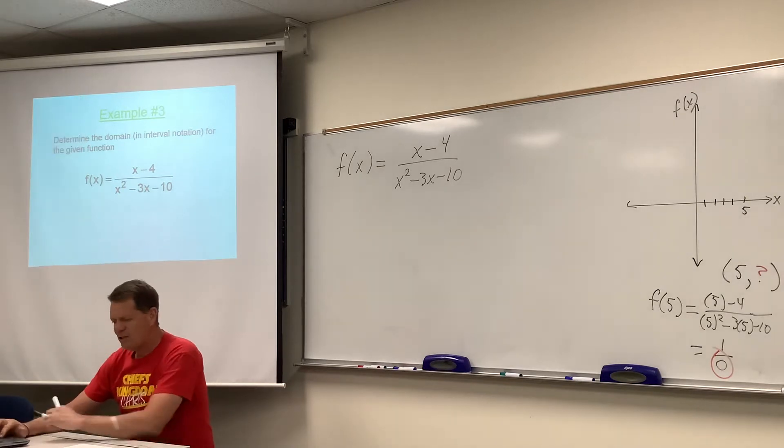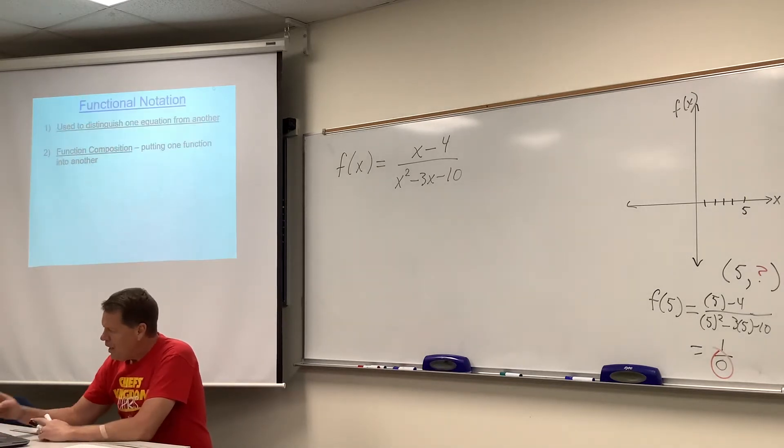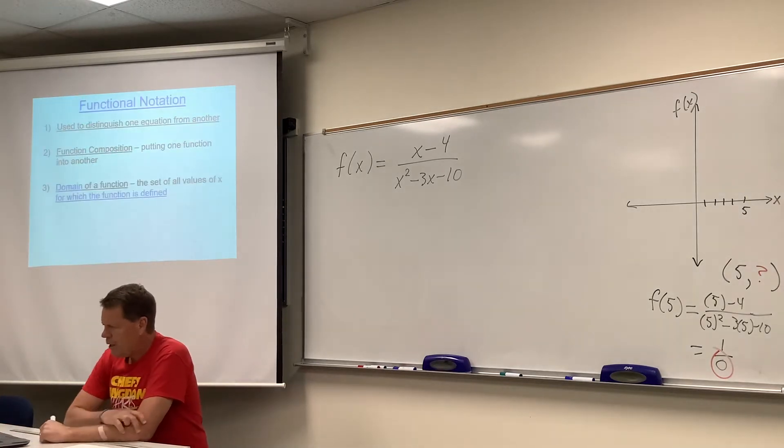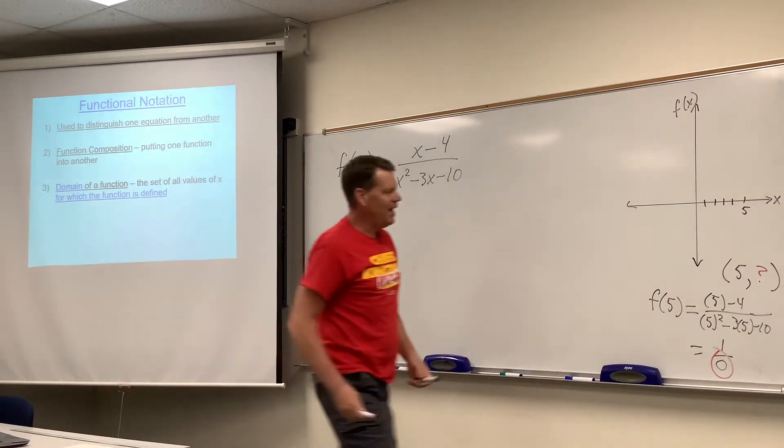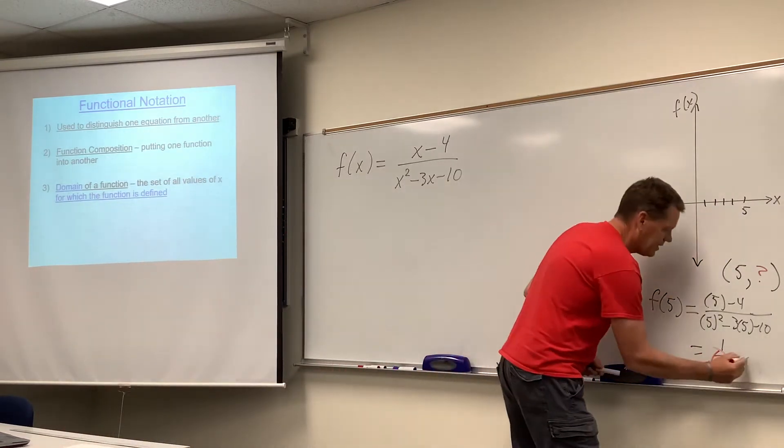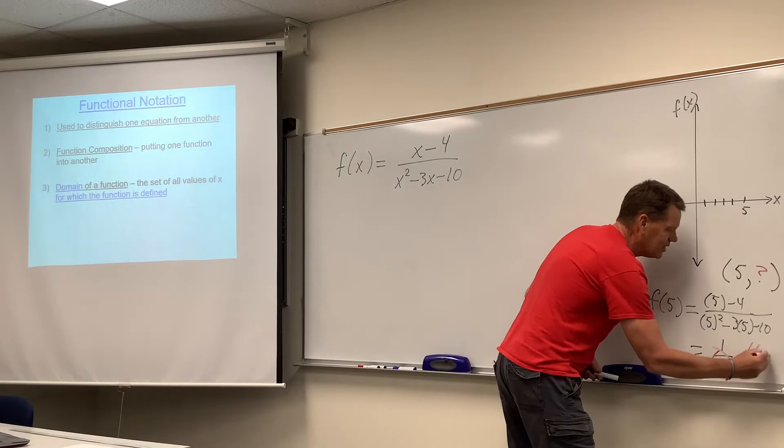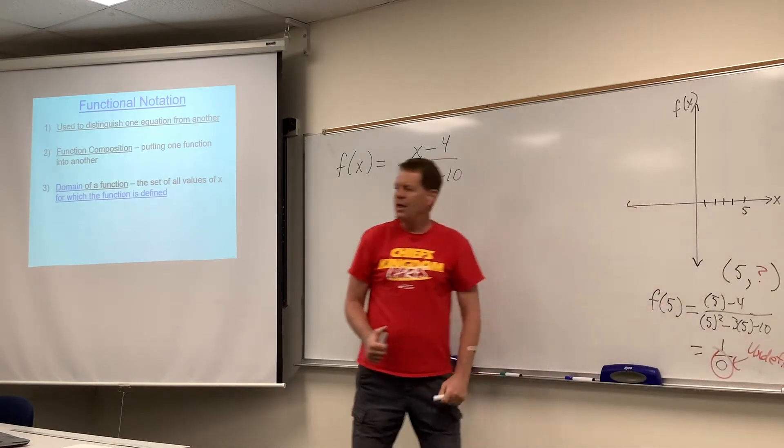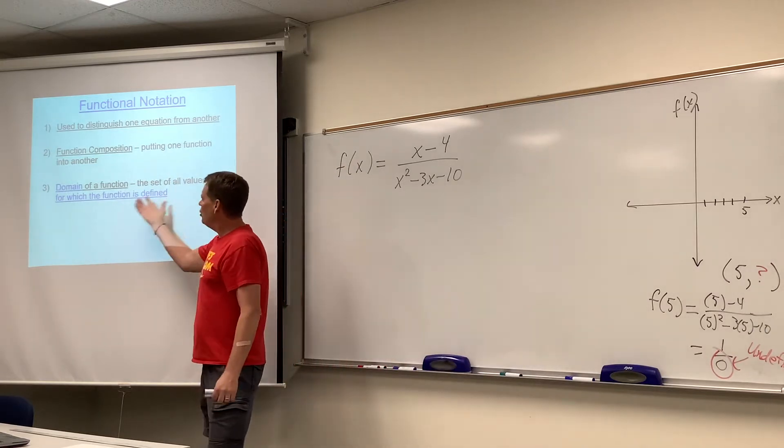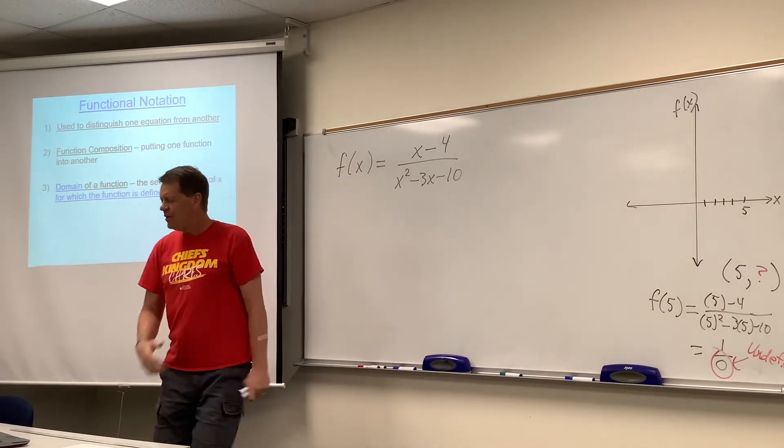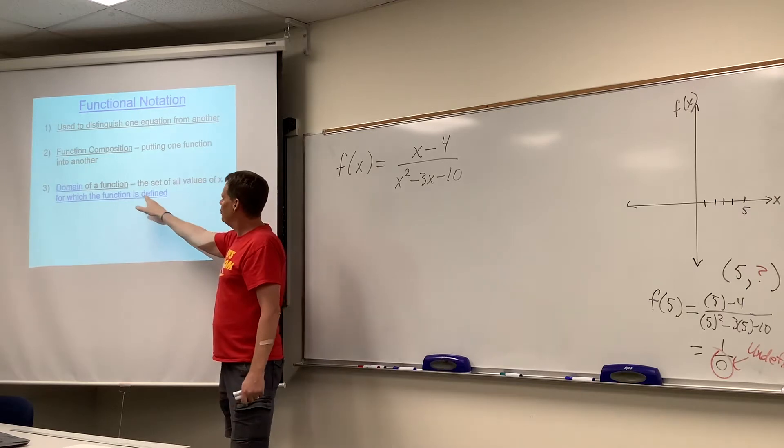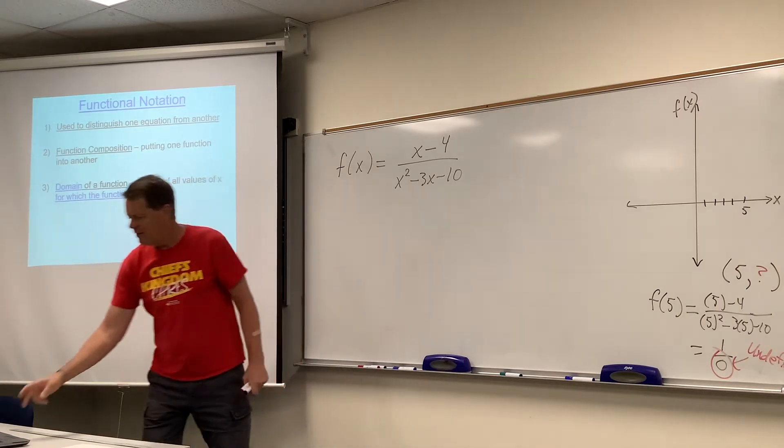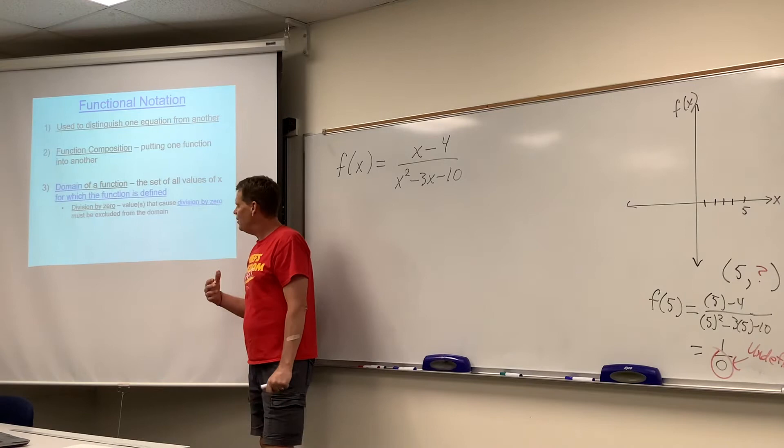And so five is a problem. And so here's the definition of domain. The set of all values of x for which the function is defined. Well, five is a value of x for which the function is undefined. We've talked about division by zero. You can't do it. It's undefined. The point is five wouldn't be in the domain for that function because if you plug it in for x, the function is undefined. So that's the first issue that we will talk about is division by zero.